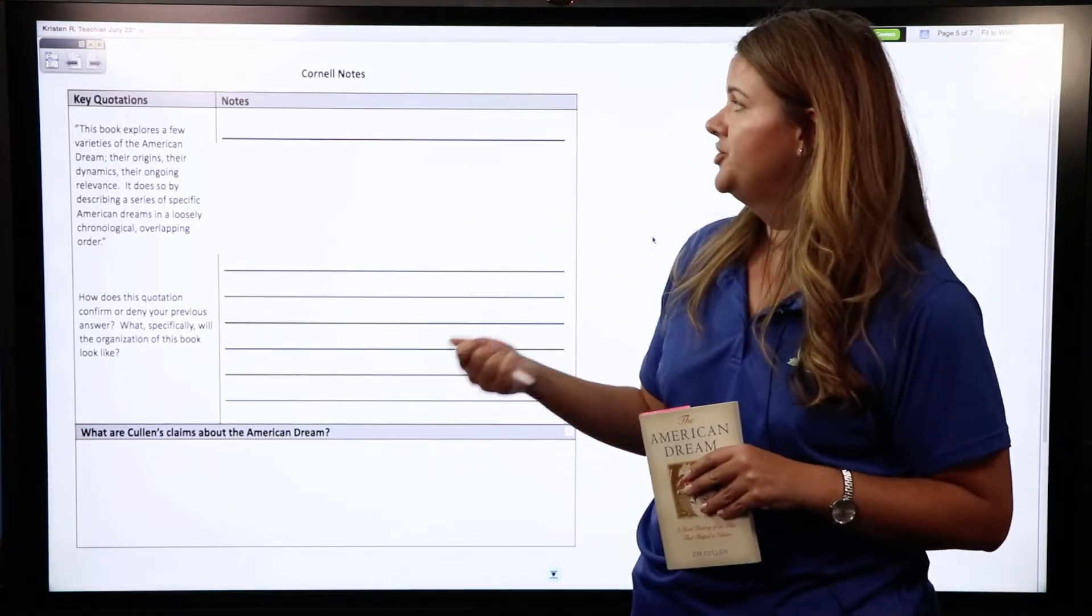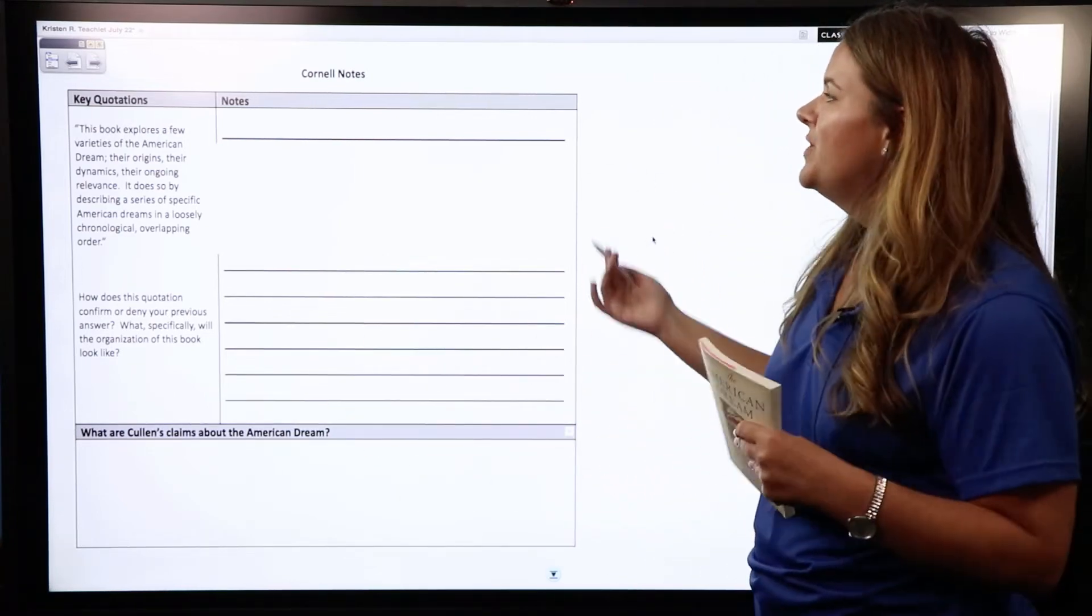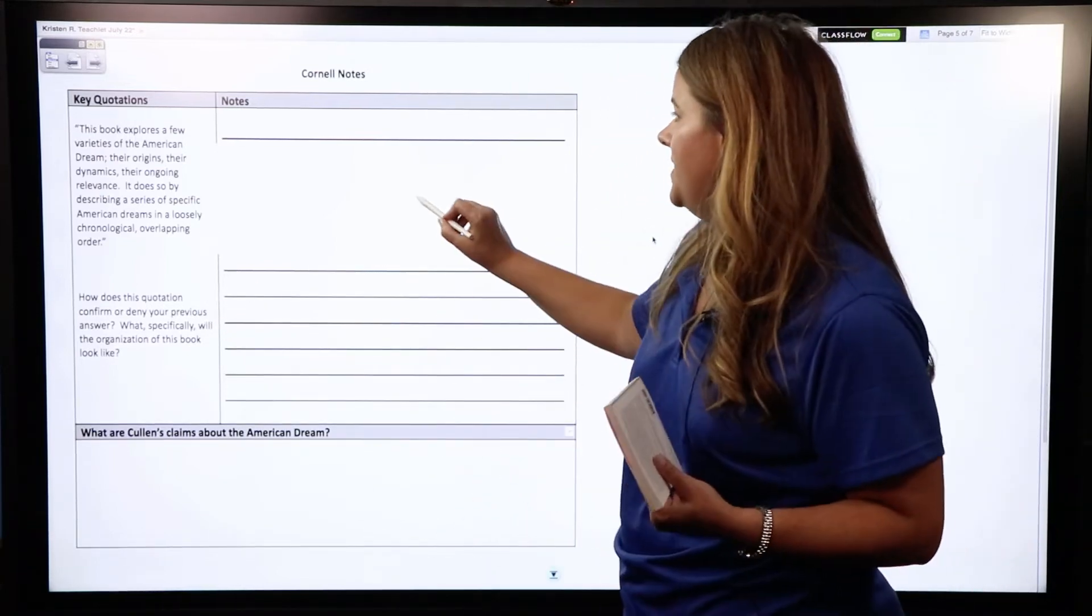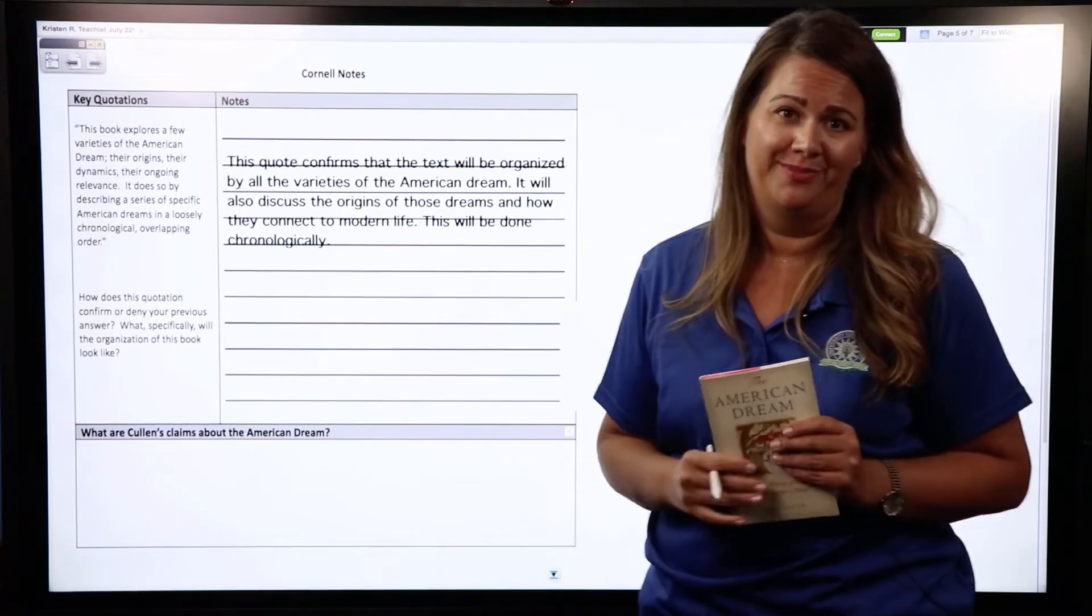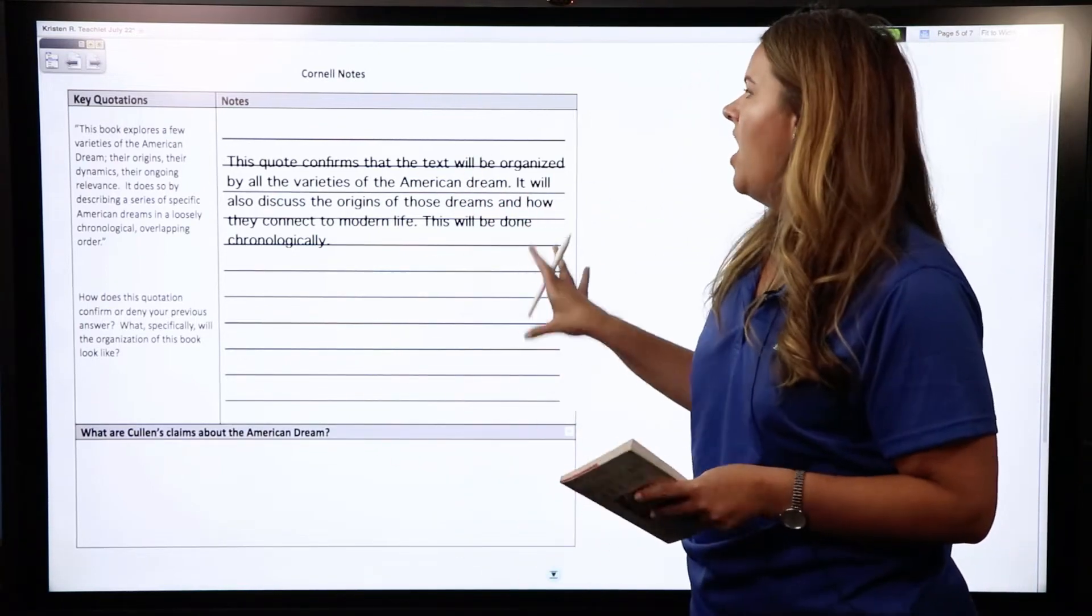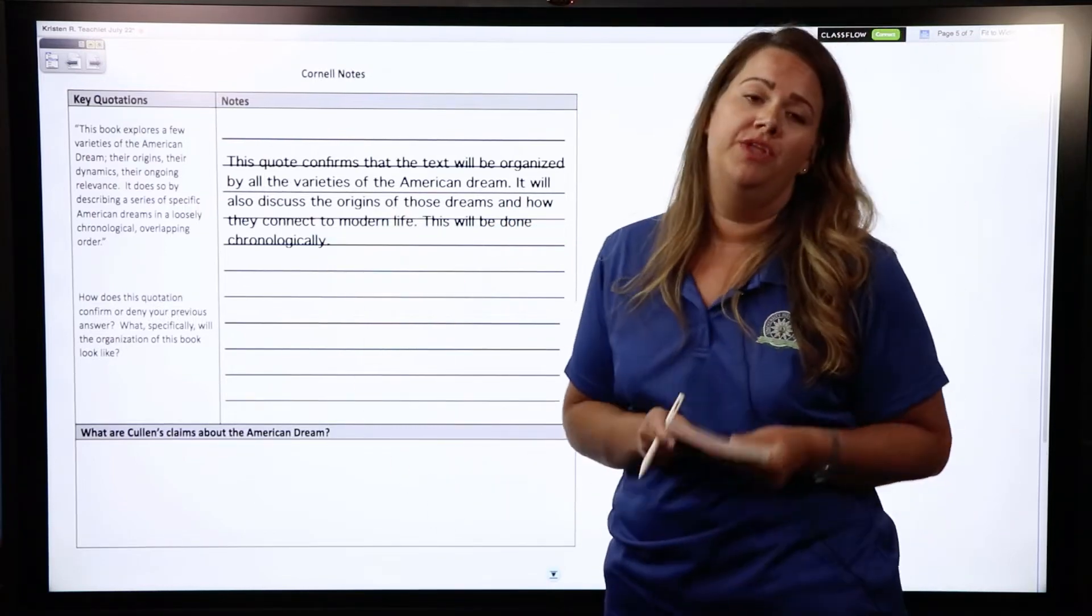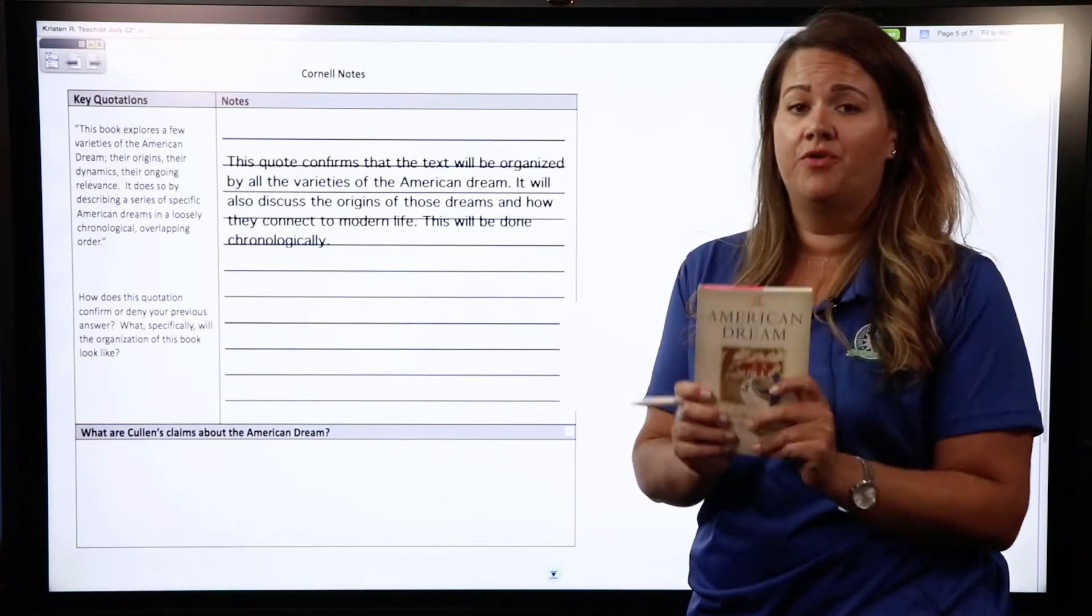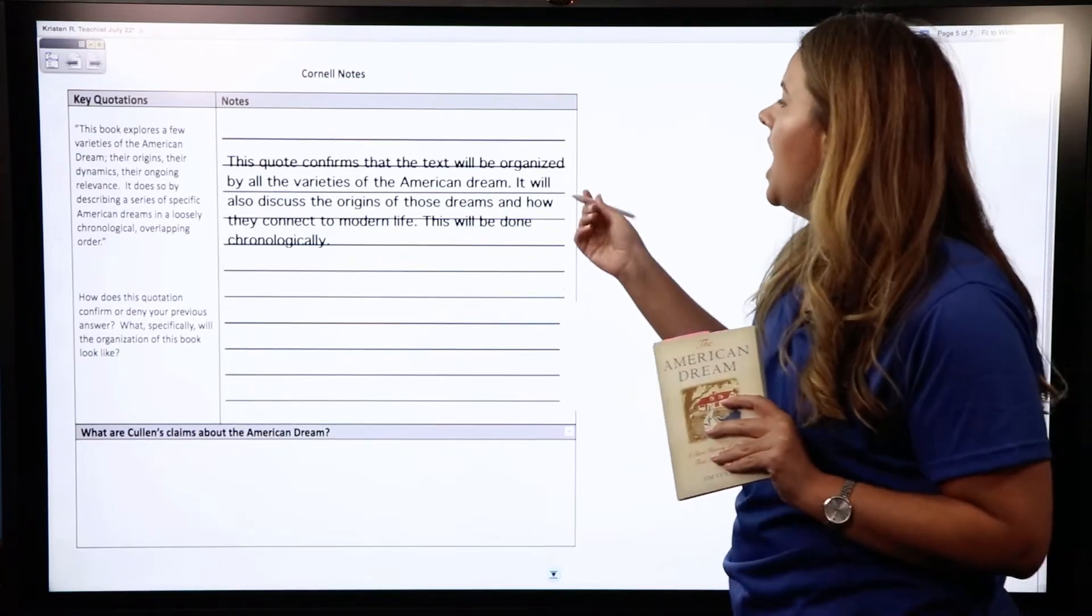So when I think about that quote and I think about the first part of this question, I know for me that all of my suspicions were confirmed. Because in that previous quote when I hear that word variety I automatically think varieties of the American dream. So for me this quote only reinforced the idea that we're going to be presented with different options, different varieties, different takes, different perspectives on the American dream in our society.